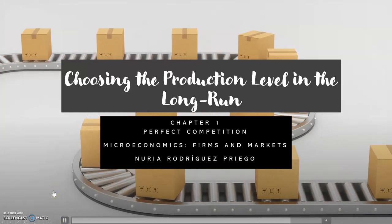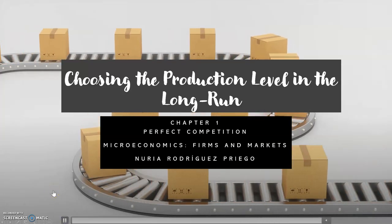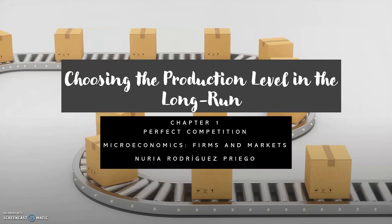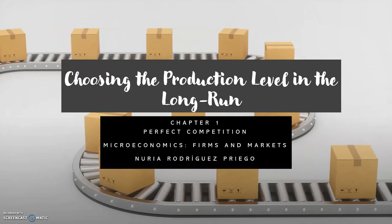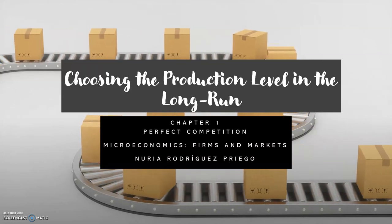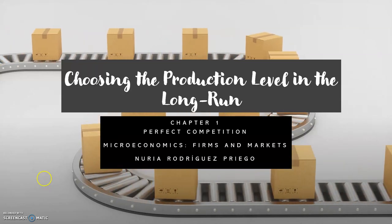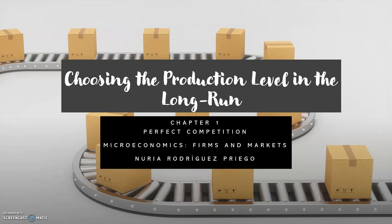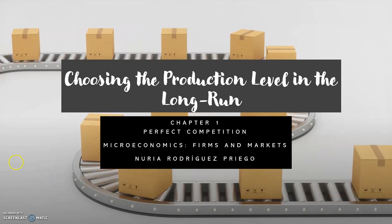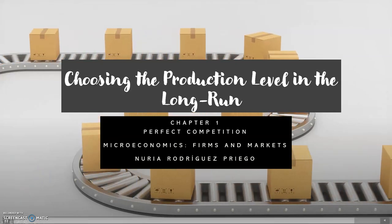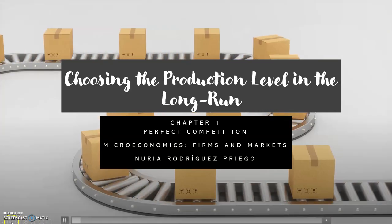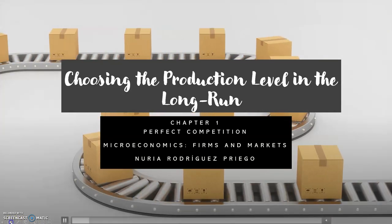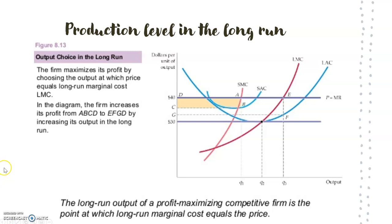Hi, this is video number five of chapter one on perfect competition. In this video we are going to talk about how to choose the production level in the long run.